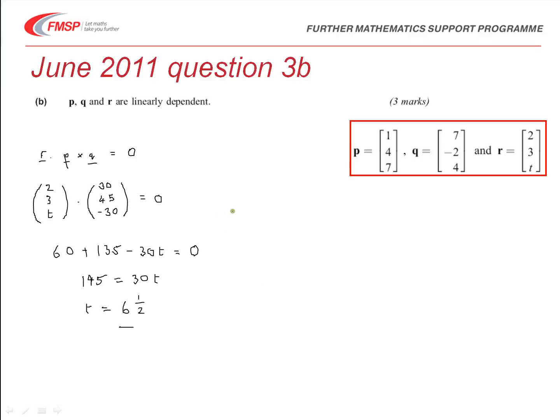Where the marks come in this case: for attempting a triple scalar product, there's your method mark. For obtaining an appropriate expression for T, you'll get one mark, and then for obtaining the correct value of T out of that expression, you'll get one mark.